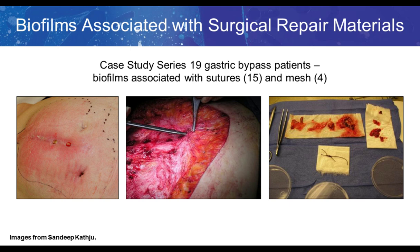Here is a pre-op and intraoperative example of a patient who developed a surgical site infection following open gastric bypass surgery. This case series covers 19 patients. The pre-operative image shows redness, sutures protruding through the skin, and swelling edema. The middle intraoperative image shows Dr. Sandeep Kathu, a general surgeon who collaborated on this case study. On the right is an example of suture material removed from the patient and examined in the laboratory.